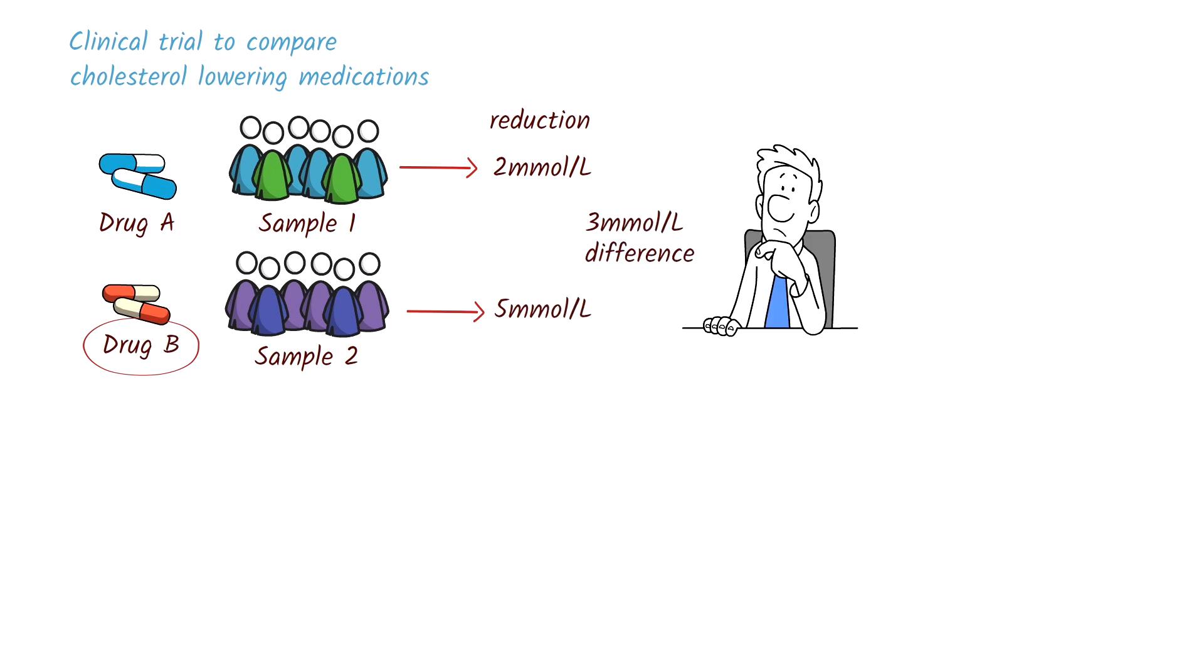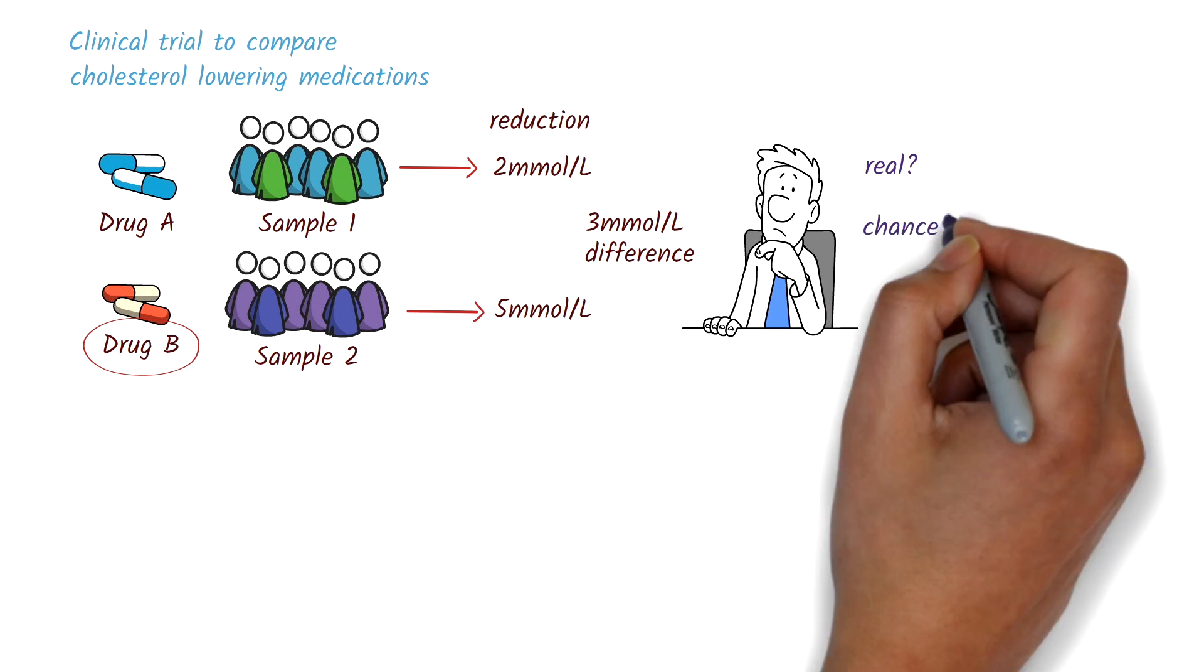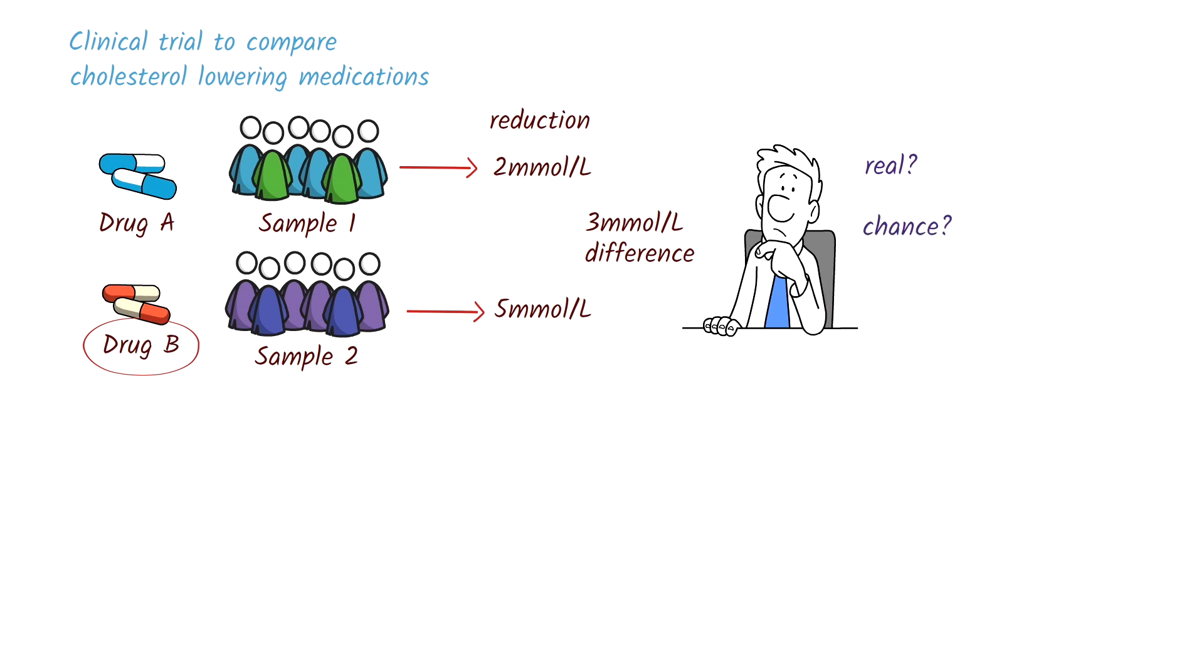So, the question is, is the difference real, or is it just due to chance? Let's use hypothesis testing to answer that question. The null hypothesis says that there is no real difference between the two groups. The alternative hypothesis, on the other hand, says that there is actually a true difference between the two groups.